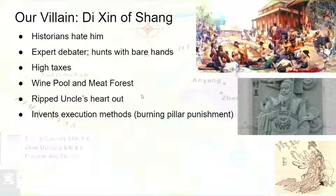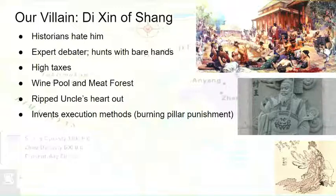Di Xin also invented execution methods like the burning pillar punishment. Basically, you have a balance beam above a pit of fire. The execution method involves having a prisoner stand on that balance beam with their bare feet as the fire rages around them. As their feet get burned by the hot balance beam, the prisoner then falls down into the pit of fire and dies.